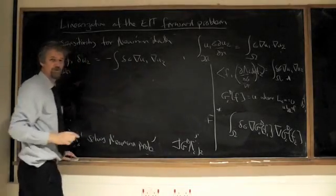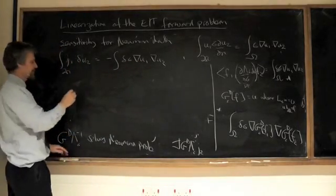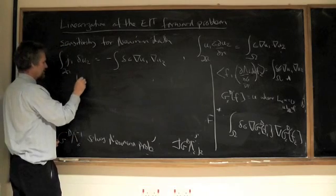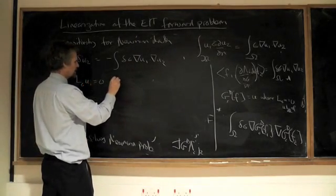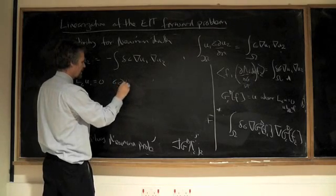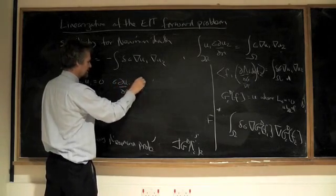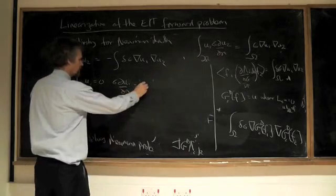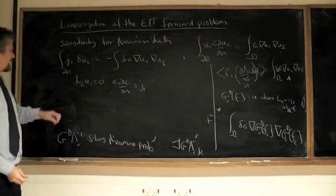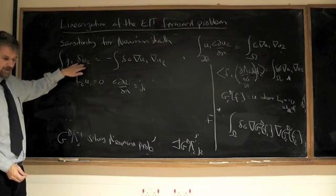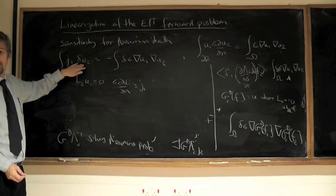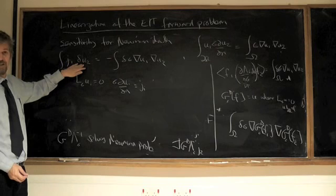Now these are the solutions for the Neumann problem. So L sigma Ui is equal to zero, but sigma d Ui by d n equal to Ji, the Neumann data. And in fact in this case, U2 is actually the voltage that's really there if I apply the current pattern J2.